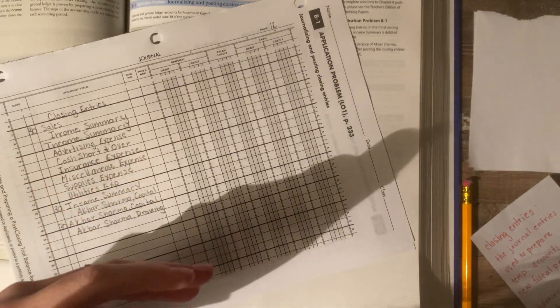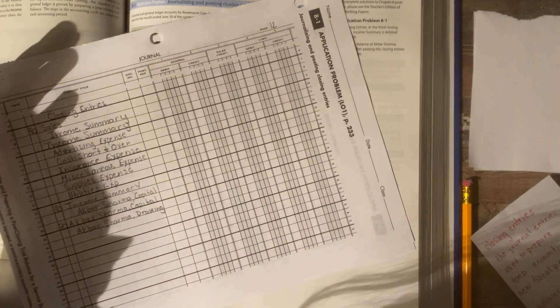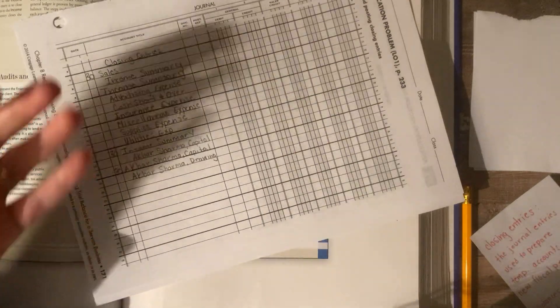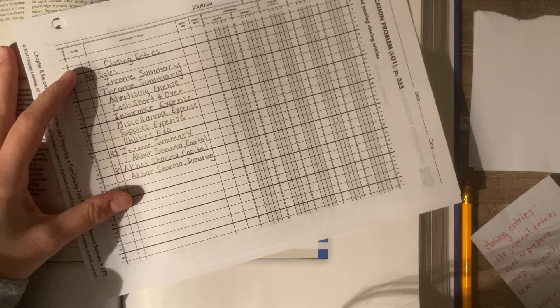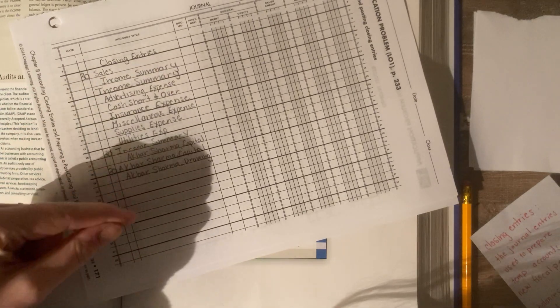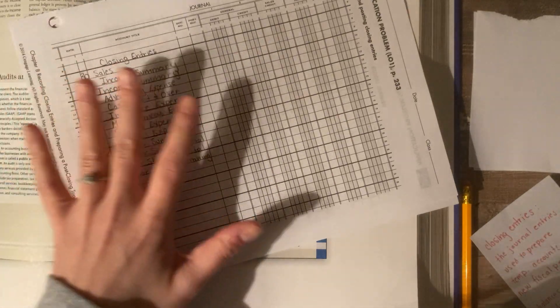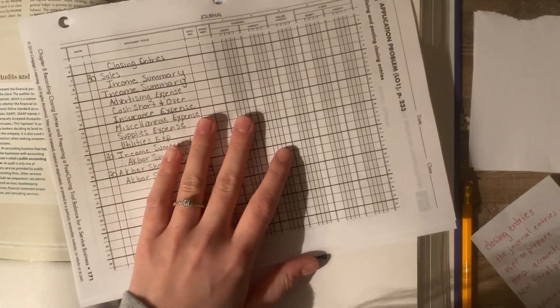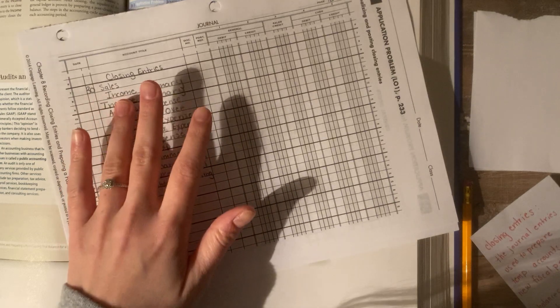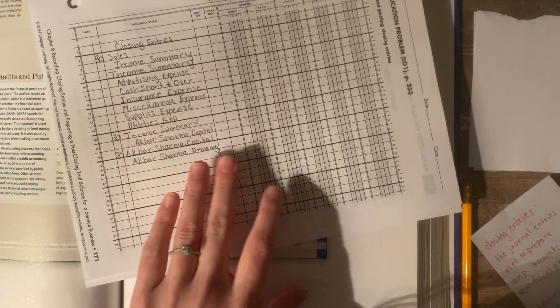And then from there, we complete some closing entries. Anything that we are closing out. I'm talking about sales account and expense accounts. We need to close those out at the end of the accounting cycle. Because that's what we do. So, we close them out to the income summary accounts. Then we close the income summary account out to capital. Then we close capital out to drawing.